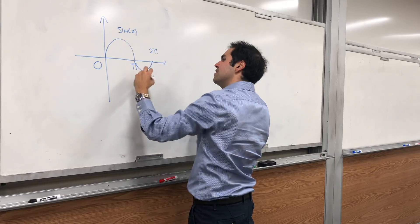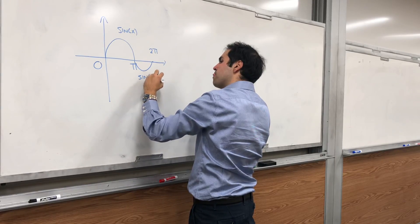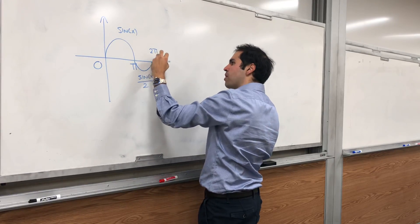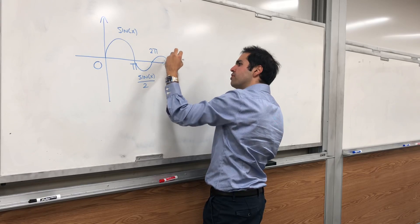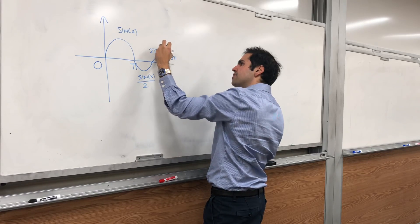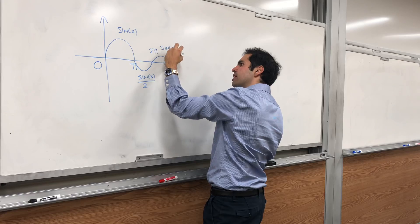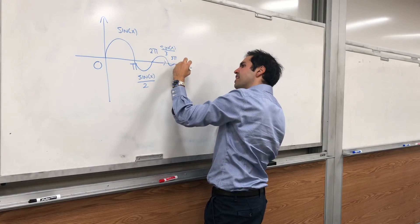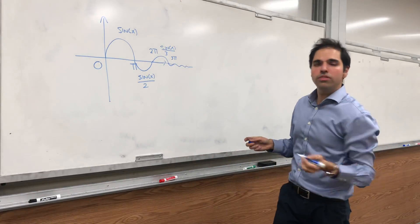So sine of x, sine of x over 2, and then it just gets smaller and smaller. From 0 to 3 pi, it's sine of x over 3, etc. Then you get this really weird curve.